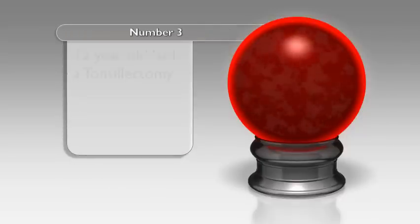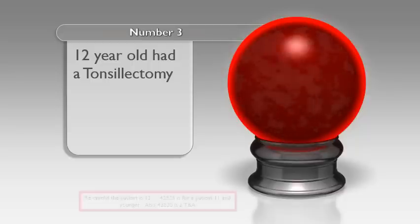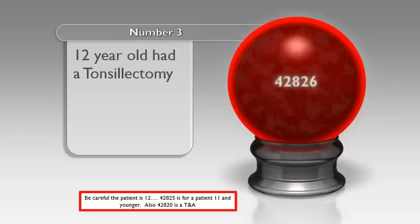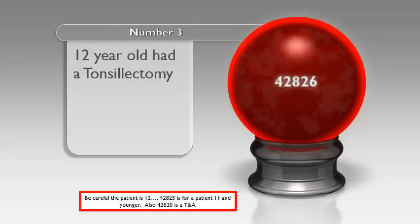Number three: a 12-year-old had a tonsillectomy. If you said 42826, you are correct. Be careful — the patient is 12 years of age. If they are younger than 12, you would select 42825, which is for patients 11 years old and younger. The age of 12 can throw people off, so if you got 42826 correct, outstanding.